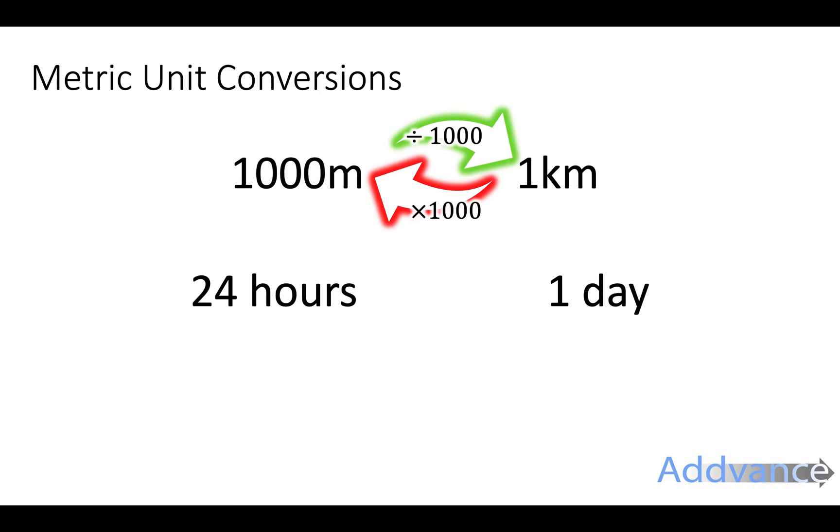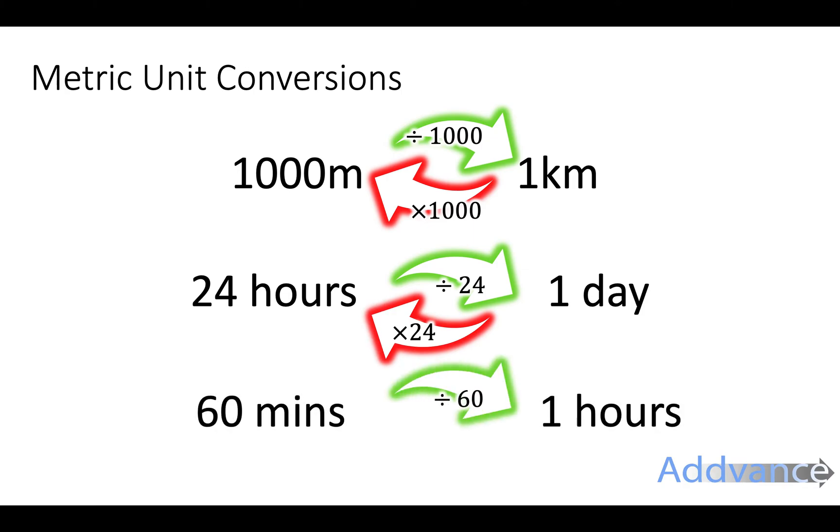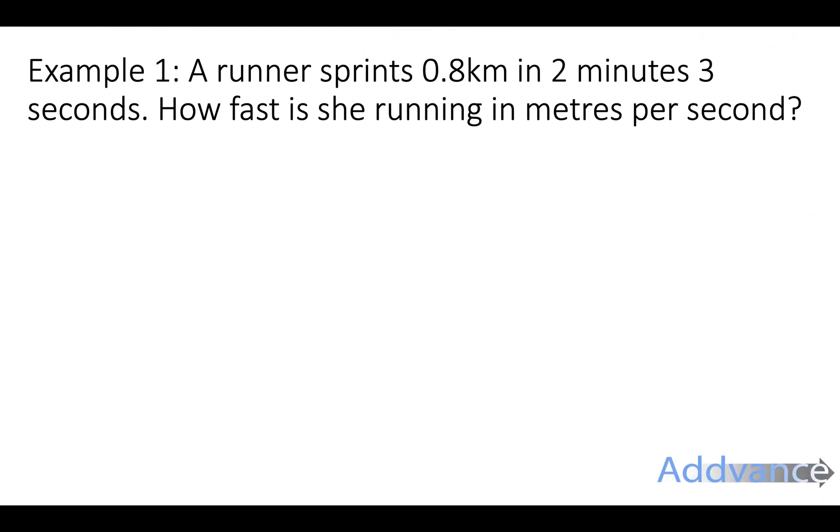To go from hours to days, you divide by 24 and to go from days to hours, you times by 24. From minutes to hours, you divide by 60 and times by 60. So let's see this in action with our first example.